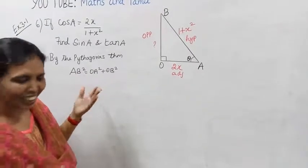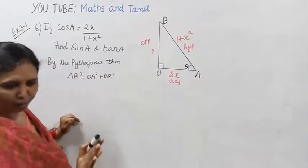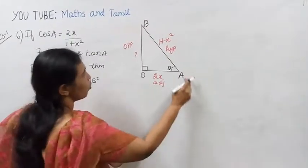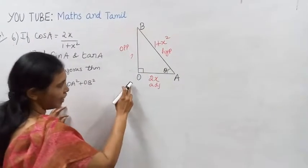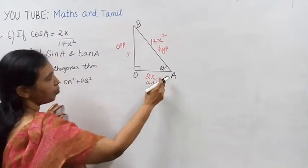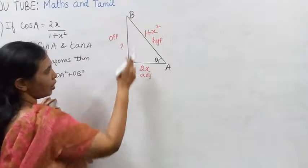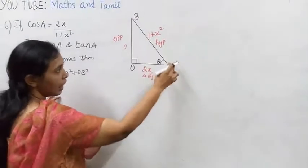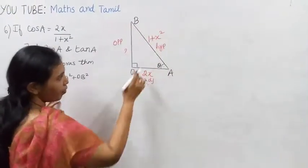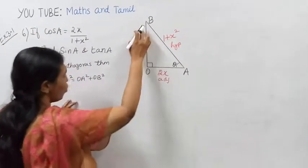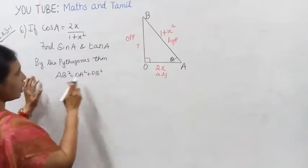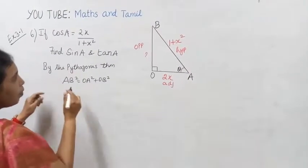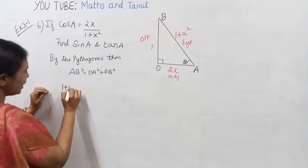We know the opposite side. The right-angle triangle is OAB. By the Pythagorean theorem, AB squared equals OA squared plus OB squared. AB squared equals 1 plus x squared.